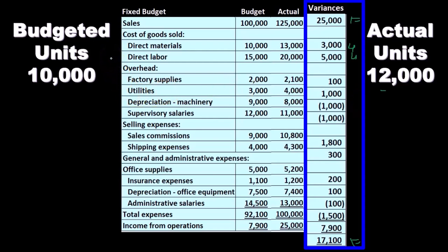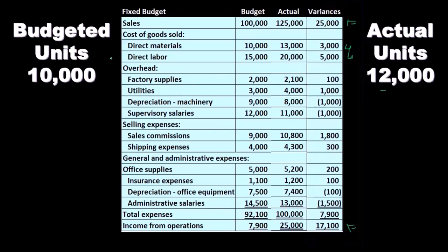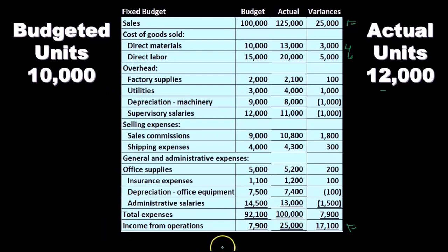To do that, we're going to take our standard type of income statement and break it out into a contribution margin type of income statement. You see we have here the standard sales and cost of goods sold, broken out by category of what the expenses do for us, as opposed to the behavior of the expenses — the fixed and variable. We'll come up with a budgeted income statement in contribution margin format, same bottom line of $7,900, but in a format of behavior.